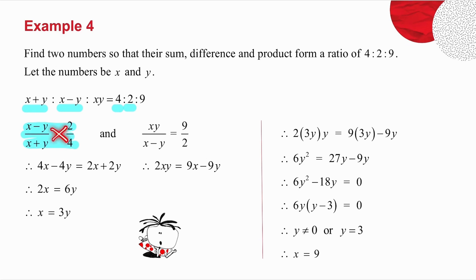I cross multiply and simplify and I get that x equals 3y. I then take this one over this one, which must equal 9 over 2. Again, I cross multiply. Now this x here and these x's are exactly the same. So what I do in place of these x's here, I put 3y. So this equation becomes that.